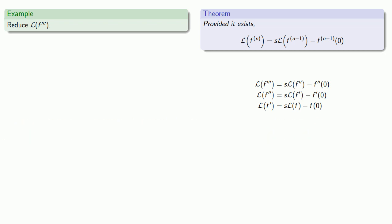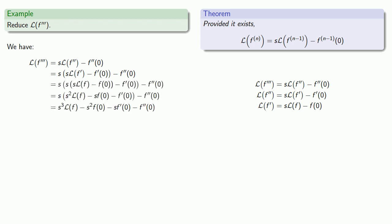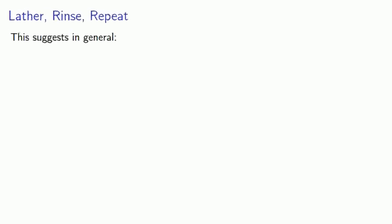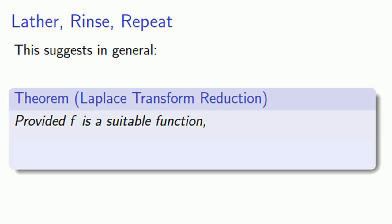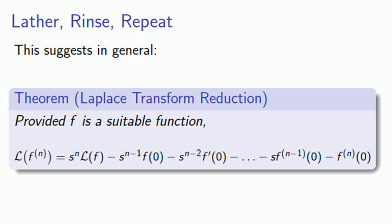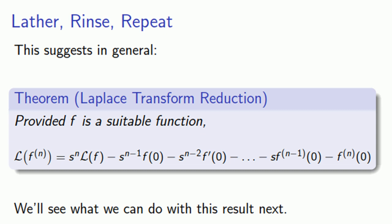We have the Laplace transform of the function — we can't simplify further — but we can expand out our products. A useful mantra in mathematics is lather, rinse, repeat, and through this process we have the following general result. Suppose f is a suitable function; then the Laplace transform of the nth derivative is given by a nice formula that relies only on the Laplace transform of the function itself, along with the values of the lower-order derivatives at zero. We'll see what we can do with this result next.